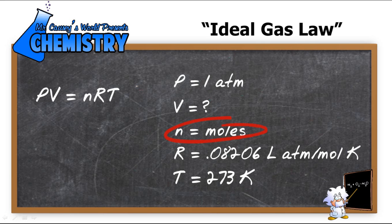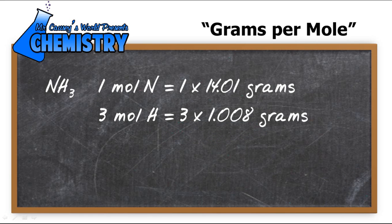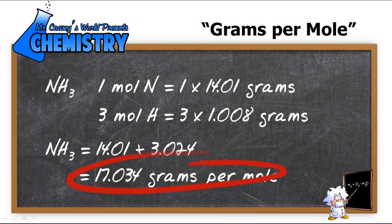So let's take our grams and convert it to moles. Grams per mole. Well, we know that in ammonia, there is one nitrogen, and that's going to be 14.01 grams per mole. And three hydrogen, and that's 3 times 1.008 grams. Add those together, and we get 17.034 grams per mole of ammonia.